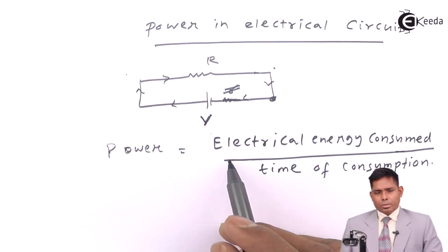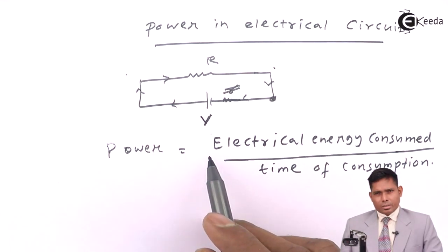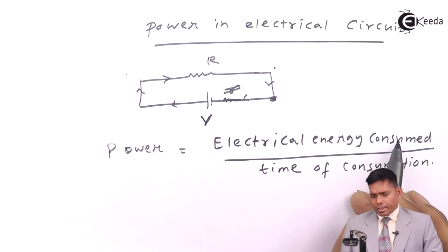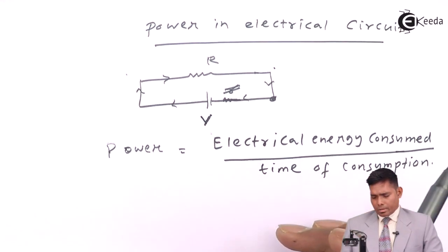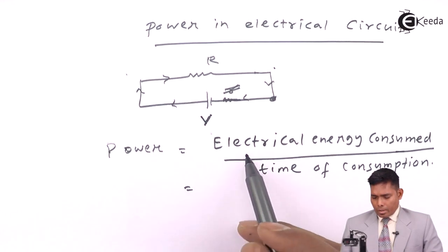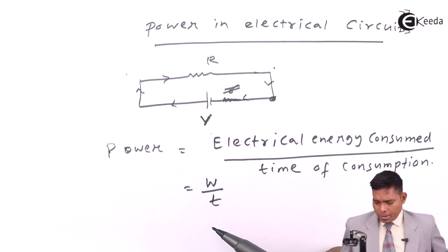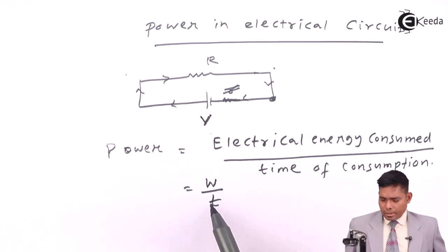Power is the rate of doing work: work divided by time. Work is the electrical energy consumed per second.